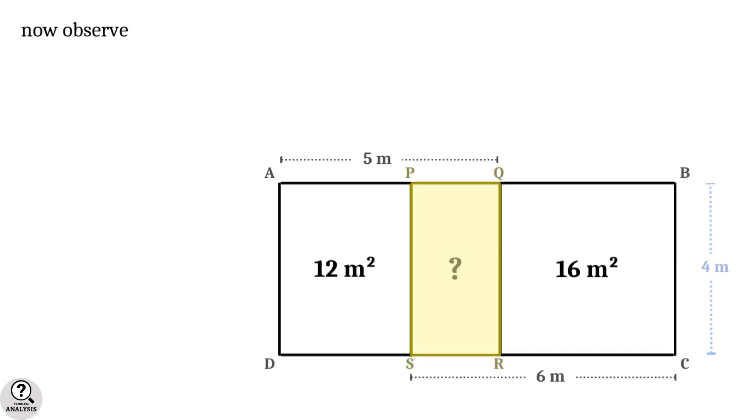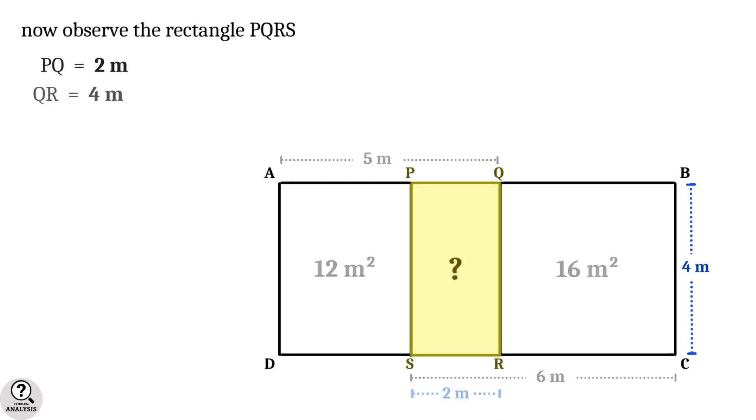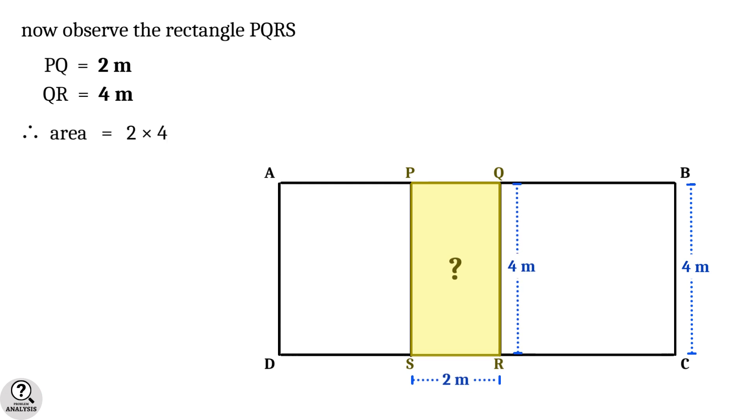Now everything is done. For the rectangle PQRS, we got the horizontal side is 2 meters and the vertical side is 4 meters. Then obviously the area equal to 2 into 4, which is equal to 8 meters square.